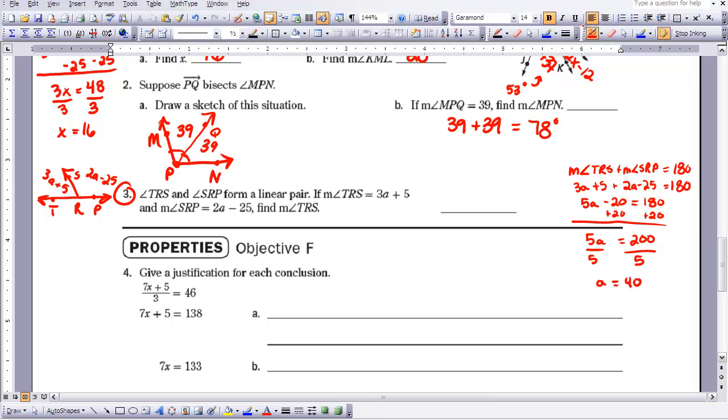Now that I know A equals 40, I can substitute it back in to answer my question of what is TRS. So 3 times 40 plus 5 is going to equal 120 plus 5. So I know that that is equal to 125, 125 degrees. So this concludes the video for 3-4. We will continue working on the other examples in class next time we meet.